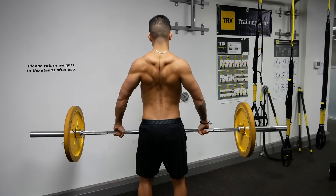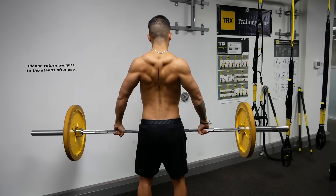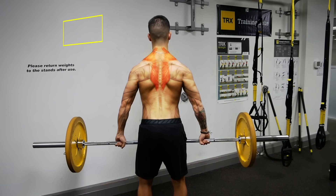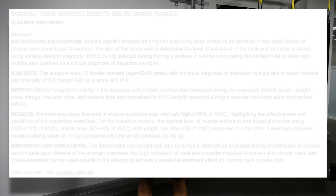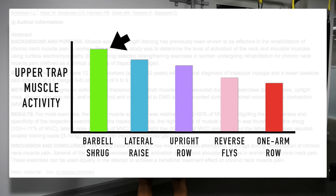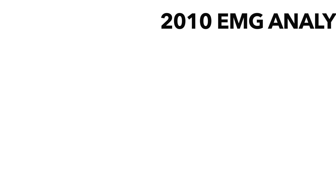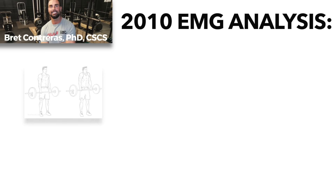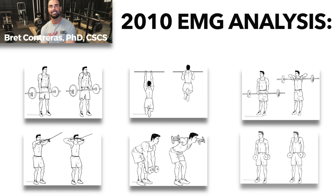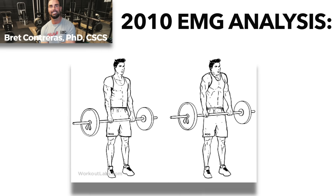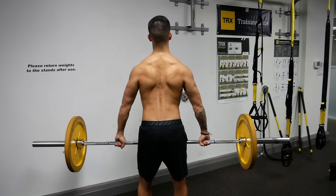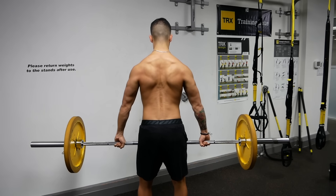The barbell shrug is another excellent exercise for trap development. It mainly emphasizes the upper traps and seems to be one of the best options for activating and developing this region. A 2008 paper by Anderson and colleagues found that the shrug elicited the highest upper trap activity when compared to four other common upper trap exercises. In agreement, an extensive 2010 EMG analysis by researcher Brett Contreras analyzed upper trap activity across 25 different shoulder and trap exercises, and the barbell shrug was again found to elicit the highest upper trap activity.